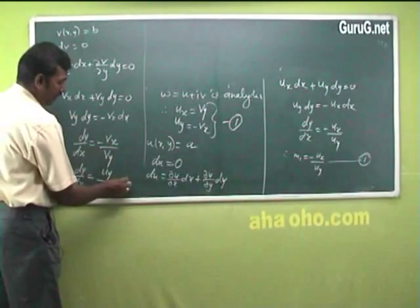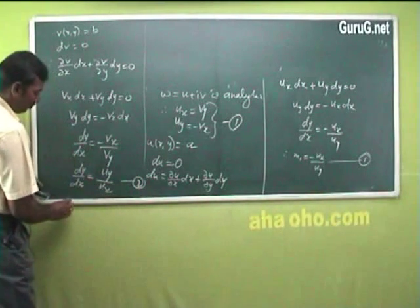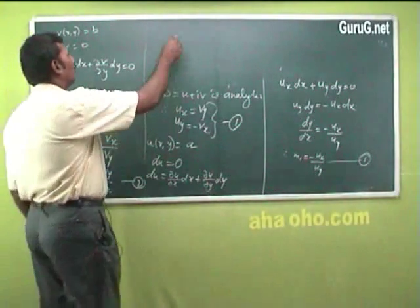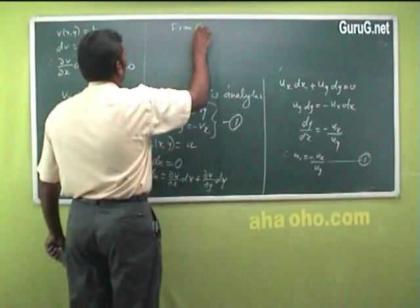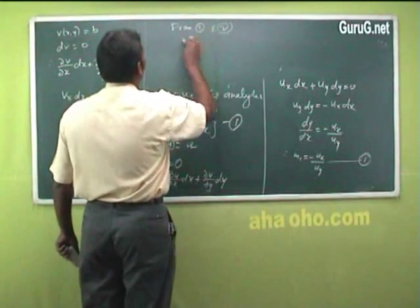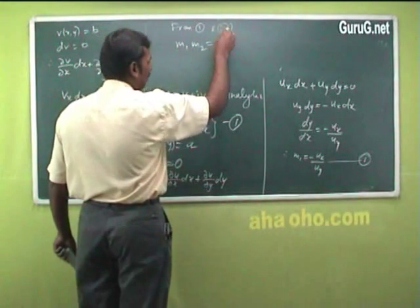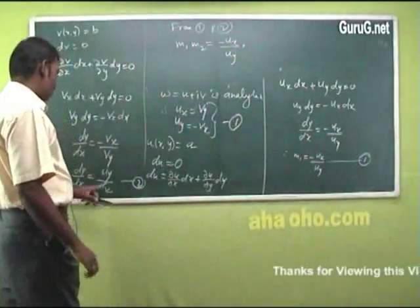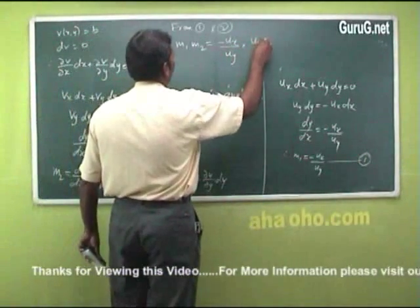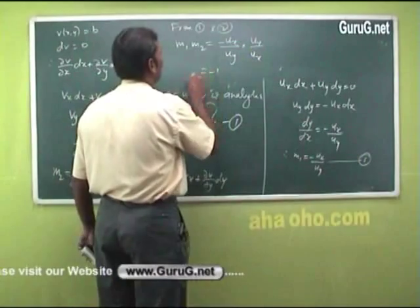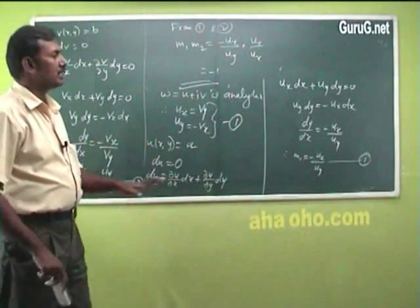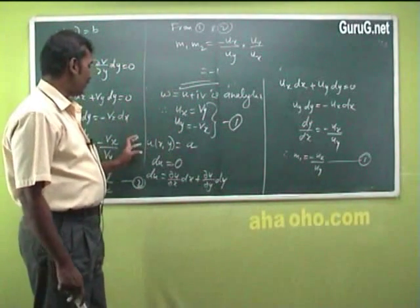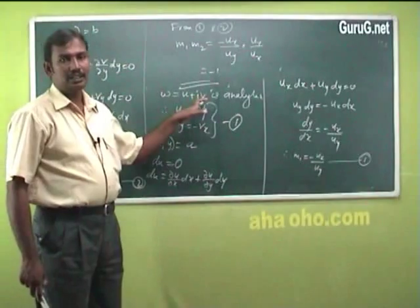So m₂ = u_y/u_x. From the expressions for m₁ and m₂: m₁ × m₂ = (−u_x/u_y) × (u_y/u_x) = −1. Therefore the two tangents are perpendicular, and so the two families of curves u(x,y) = a and v(x,y) = b cut orthogonally.